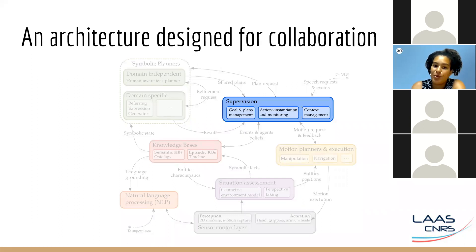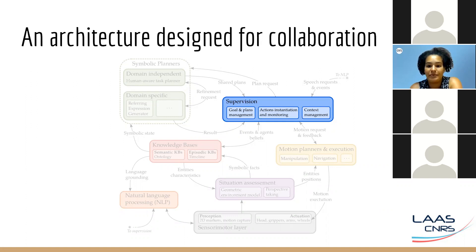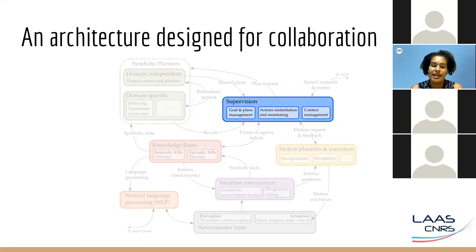The highest level component is what we call the supervision. It receives information from all other components, takes decisions, and makes the robot execute them. It decides what the current goal is, sometimes negotiated with the human partner via dialogue. Once it has a goal, it gets a plan from the planner. Then it executes the plan — meaning the robot executes its allocated actions using the motion planners — and monitors the actions allocated to the human to know where they are in the plan.